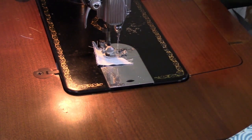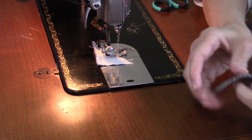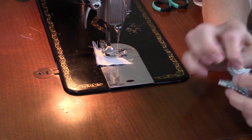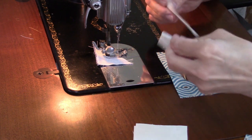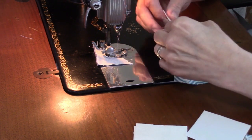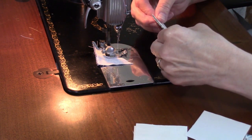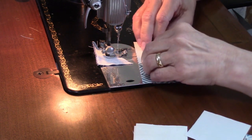I'm going to chain piece the rest of these together, save a little bit of time, which means I'm going to be doing one side at a time and then I'll flip them around and do the other side after I get that first side trimmed off and pressed back.